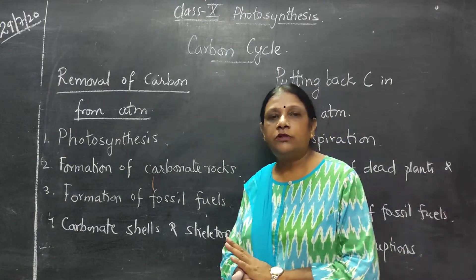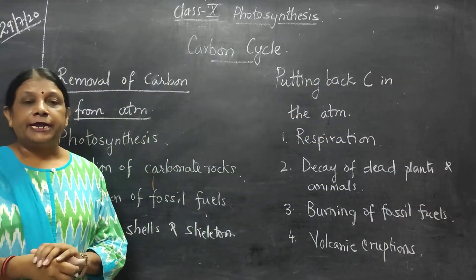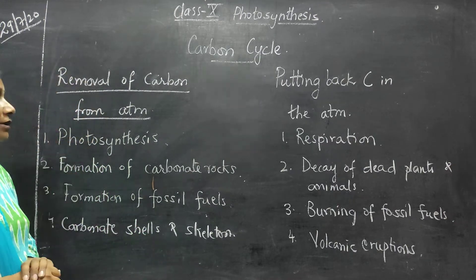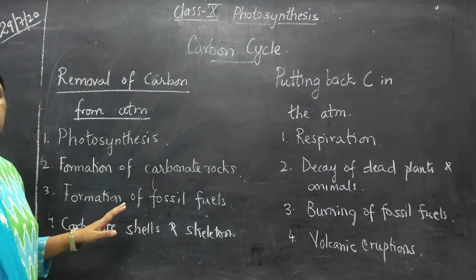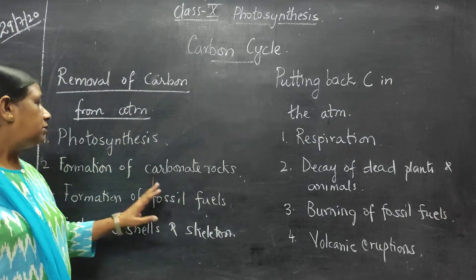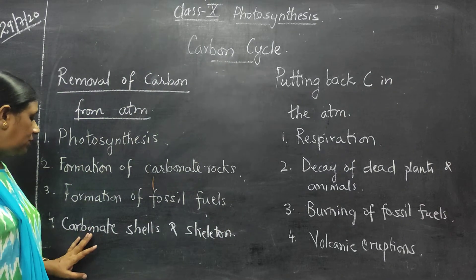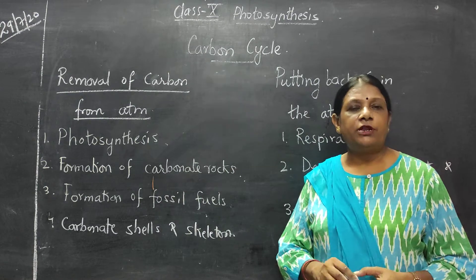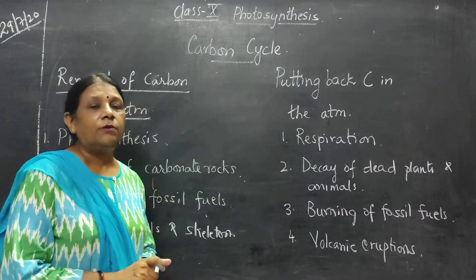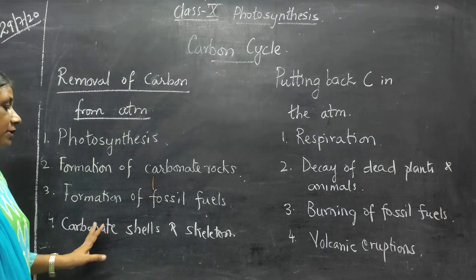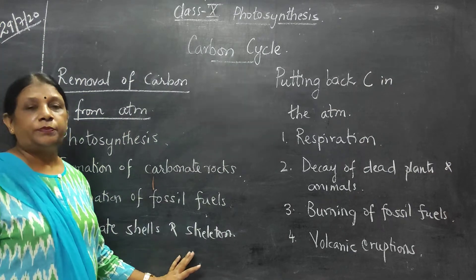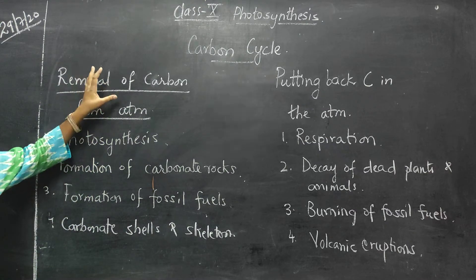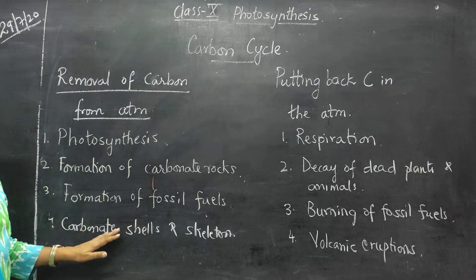Third is formation of fossil fuels. When the dead remains of plants, animals or any living organism are buried deep in the earth for millions of years, they become fossil fuels, and in that carbon is stored. Fourth is carbonate shells and skeletons. In phylum Mollusca, living organisms have soft bodies and use calcium carbonate to make shells and skeletons to protect themselves. These are the four ways in which carbon is removed from the atmosphere.